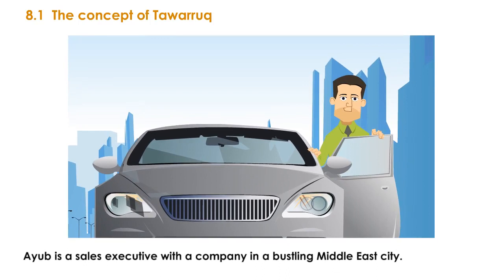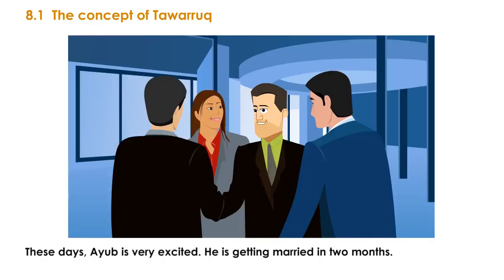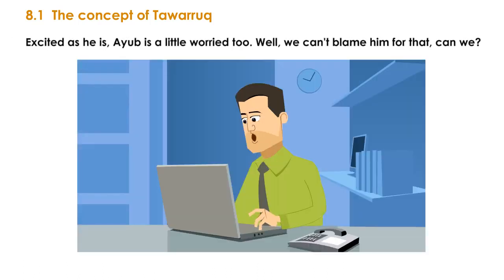Ayub is a sales executive with a company in a bustling Middle East city. Ayub is very excited — he is getting married in two months. Excited as he is, Ayub is a little worried too.